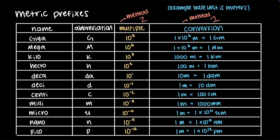For centi, the symbol is lowercase c, the multiple is 10⁻², and the conversion factor is 100 centimeters equals 1 meter. For milli, the symbol is lowercase m, the multiple is 10⁻³, and the conversion factor is 1000 millimeters equals 1 meter. For micro, the symbol is lowercase u, the multiple is 10⁻⁶, and the conversion factor is 1 × 10⁶ micrometers equals 1 meter. For nano, the symbol is lowercase n, the multiple is 10⁻⁹, and the conversion factor is 1 × 10⁹ nanometers equals 1 meter. For pico, the symbol is lowercase p, the multiple is 10⁻¹², and the conversion factor is 1 × 10¹² picometers equals 1 meter.